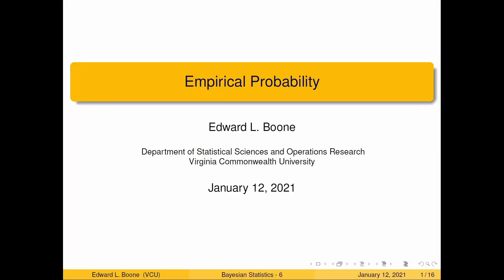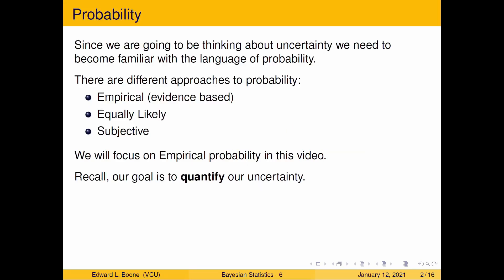Welcome to Empirical Probability. This is part of the Bayesian statistics sequence. What we're going to talk about this time is types of probabilities, but we're going to keep on with this idea of uncertainty. We're trying to somehow quantify the uncertainty.